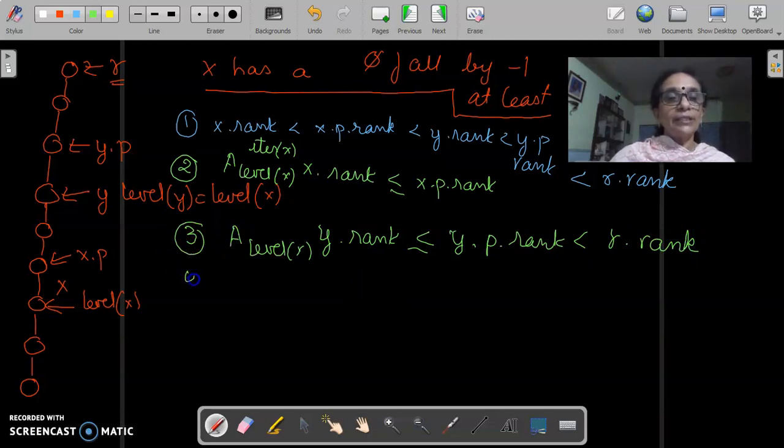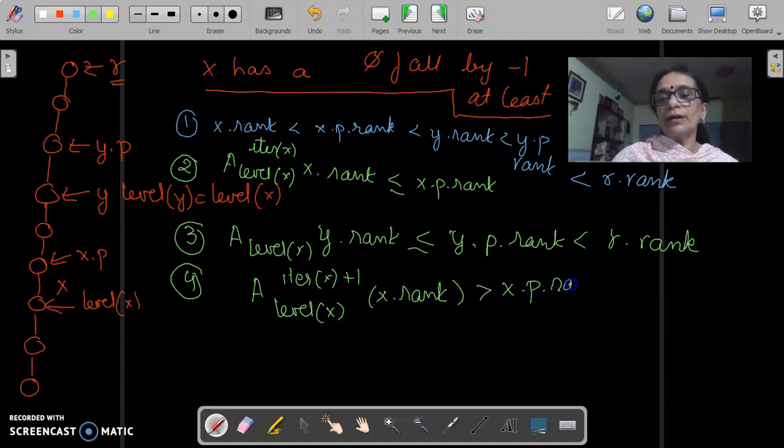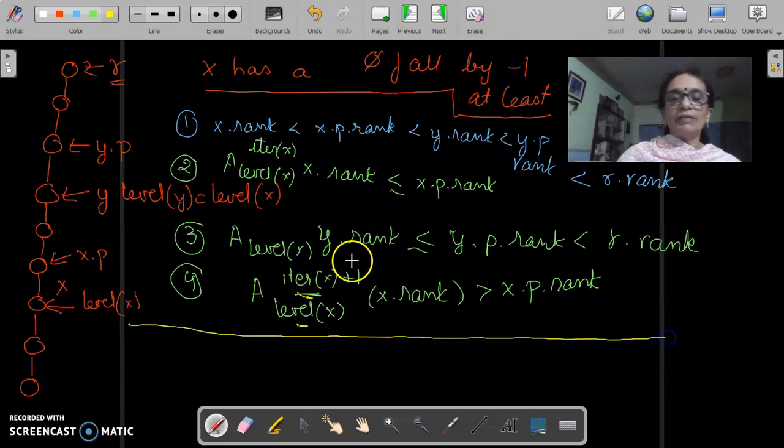So, we will have a look at a number of things that we can infer from this. Because, 1 is that. X dot rank less than X dot P dot rank. This is less than Y dot rank. This is less than Y dot P dot rank. And this is less than R dot rank. Because ranks are non-decreasing. Let us look at the second relation. Second relation that we have is. A_level of X dot rank is less than X dot P dot rank. Another relation we know is that. A_level of X, Y dot rank is less than or equal to Y dot P dot rank. Which is less than R dot rank.